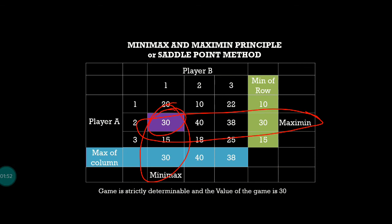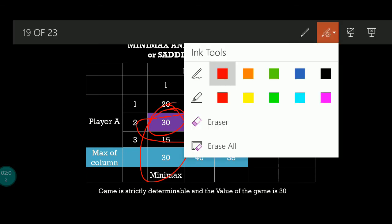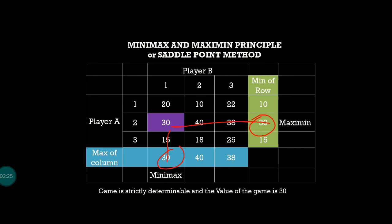To summarize the minimax and maximin method: find the minimum of each row, then find the maximum among those row minimums. For columns, find the maximum of each column, then find the minimum among those column maximums. If both intersect, the problem can be solved using the saddle point method. If there is no intersection, a different method is needed, which will be covered in the next webinar. Thank you for watching.